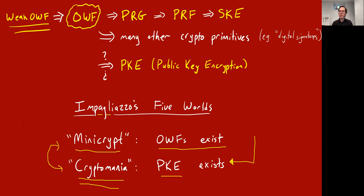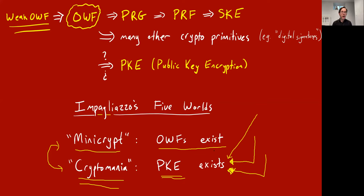You can ask: perhaps I want to make my definition of efficient computation quantum efficient computation. In that world, you might become less convinced that we're living in the world of cryptomania, because RSA security relies on the fact that it's hard to efficiently factorize integers. But we know quantum computers can efficiently factorize integers with Shor's algorithm, so that might lead you to think, oh, maybe we're not living in cryptomania.